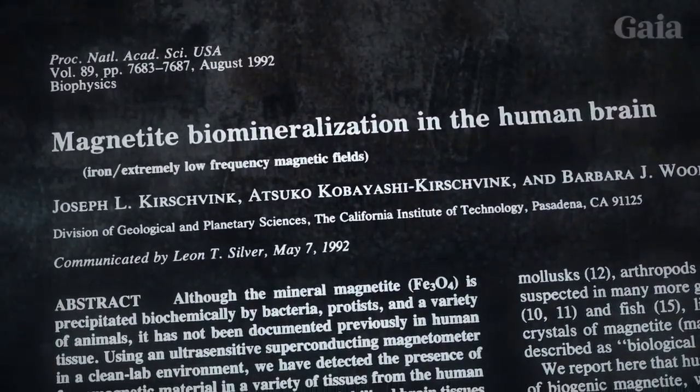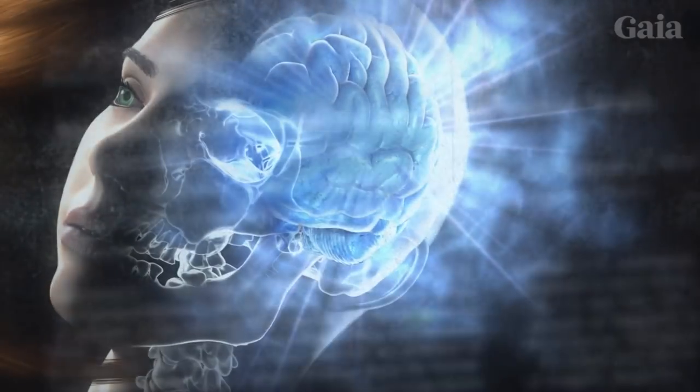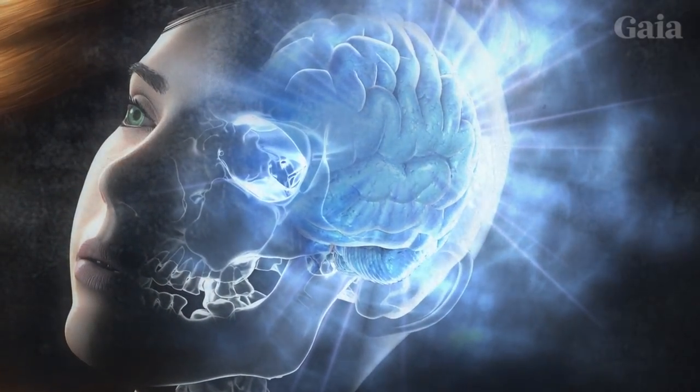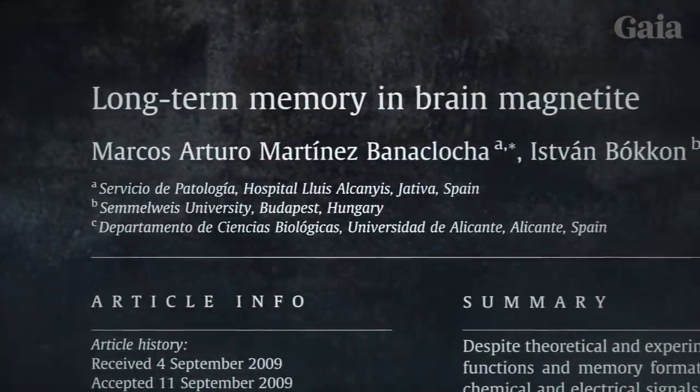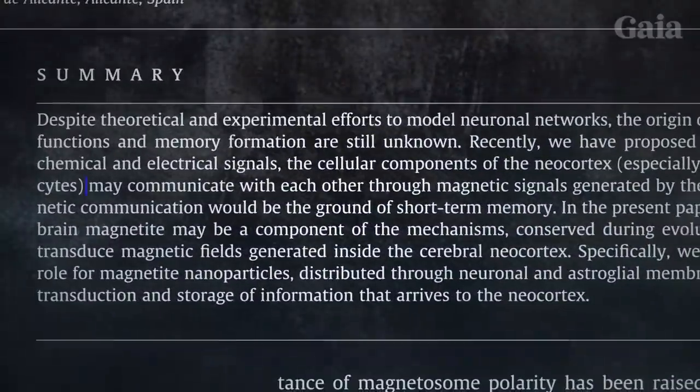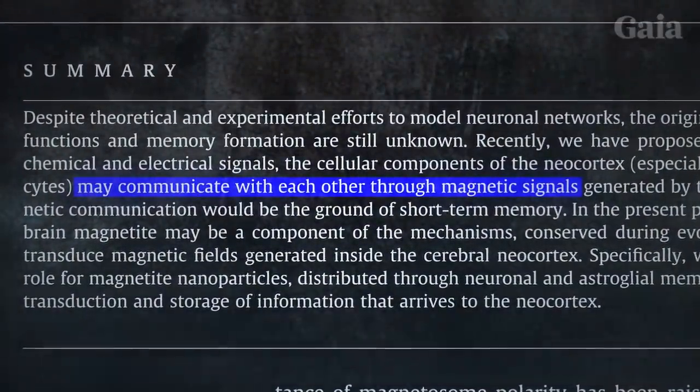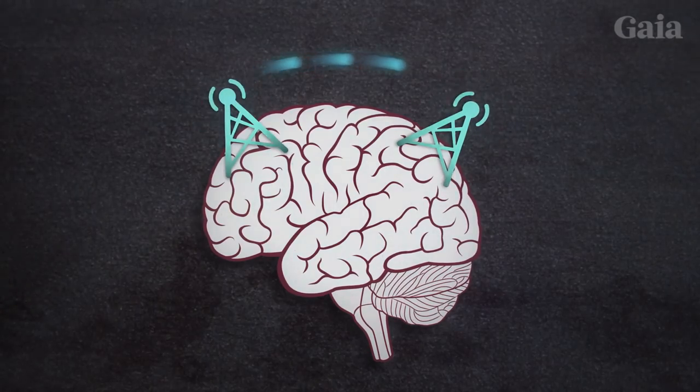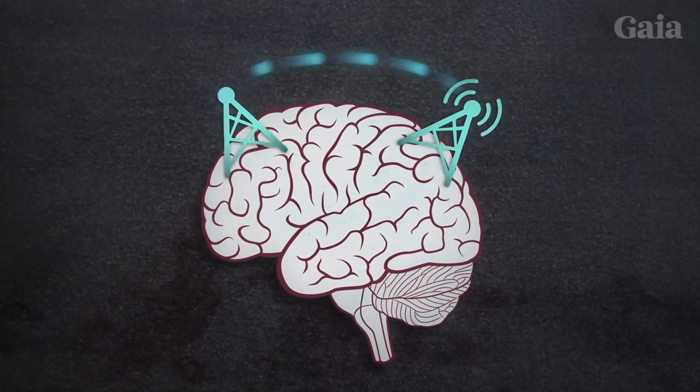A 2009 hypothesis proposed that magnetite play a significant role in long-term memory. It suggests that cellular components of the brain communicate with each other through magnetic signals, with the magnetite particles acting as tiny antennas, simultaneously receiving information throughout the different parts of the brain.